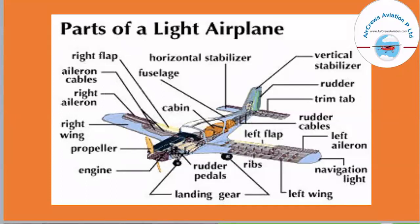Then we have the cabin, where we have the seating arrangement of passengers, situated within the fuselage of the aircraft. Followed by that we have the horizontal stabilizer in the tail section. Horizontal stabilizers are also controlled with the elevators. Then we have the vertical stabilizers, which include the rudder. Further we have the trim tab, which has a use related to the lift of an aircraft — in case we need to generate a high amount of lift, the trim tab enables that.